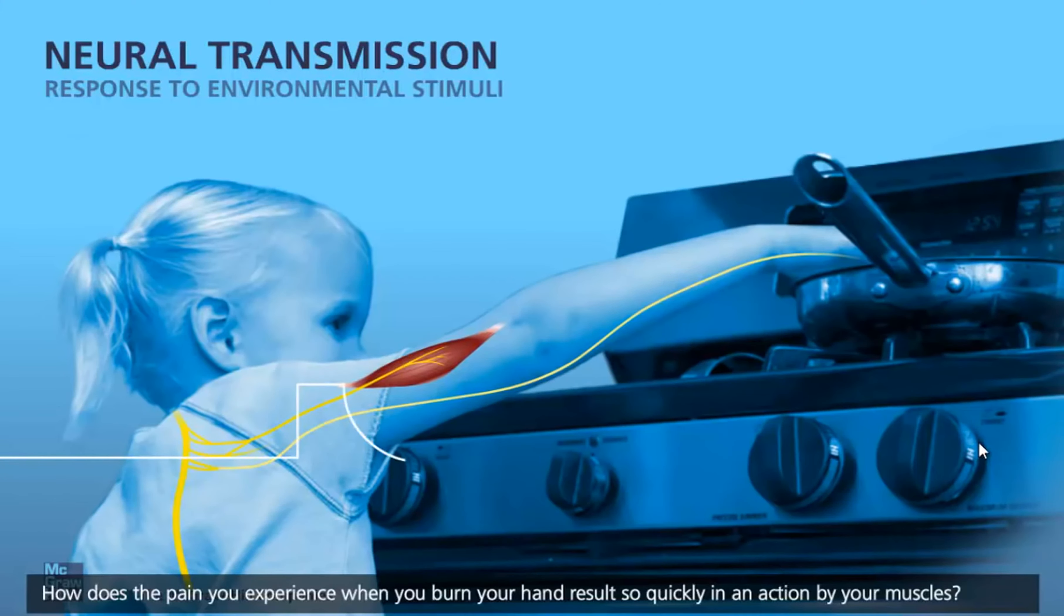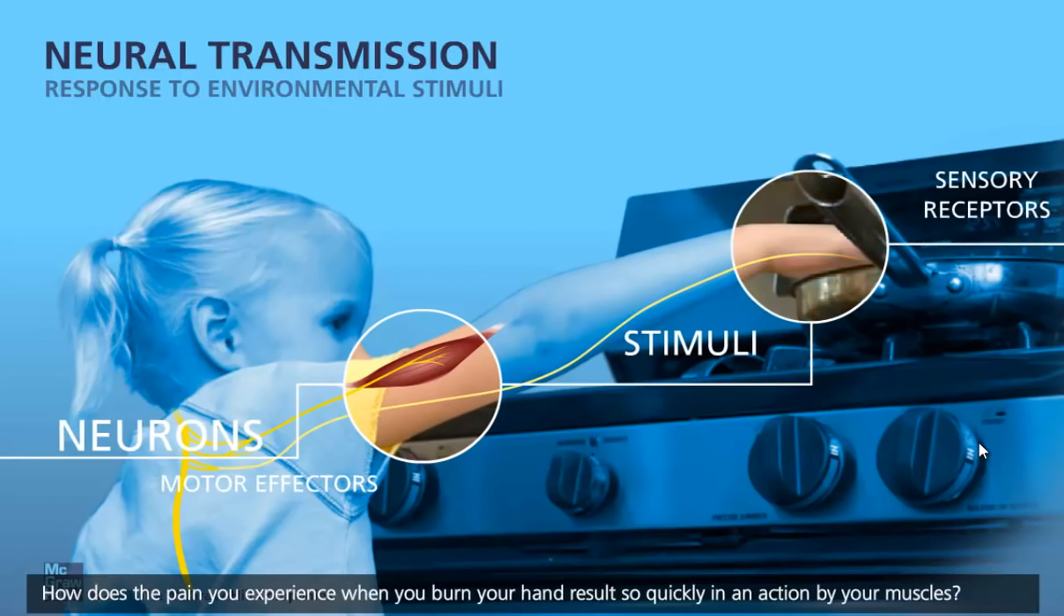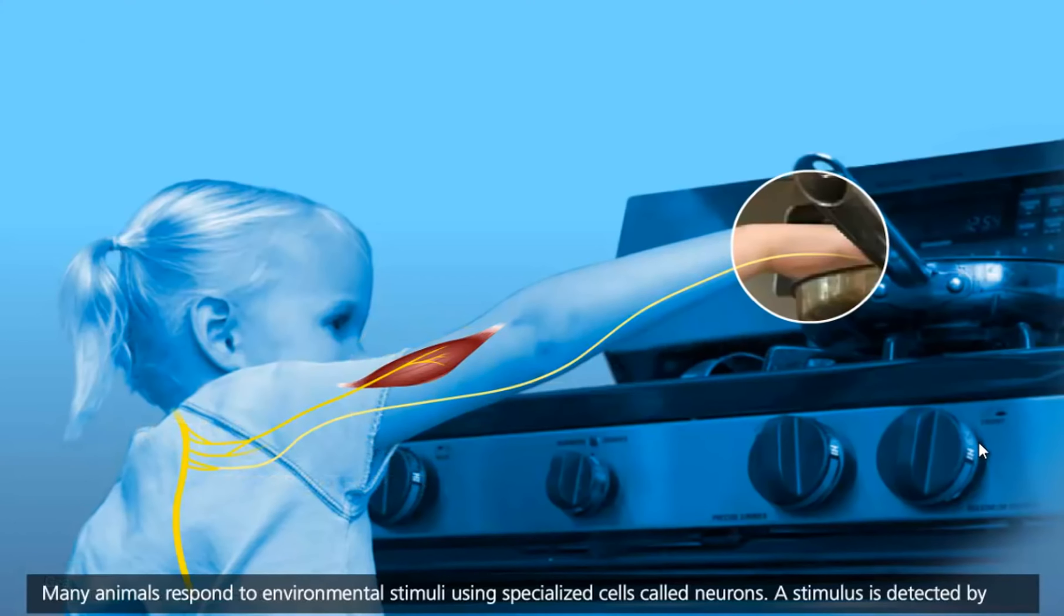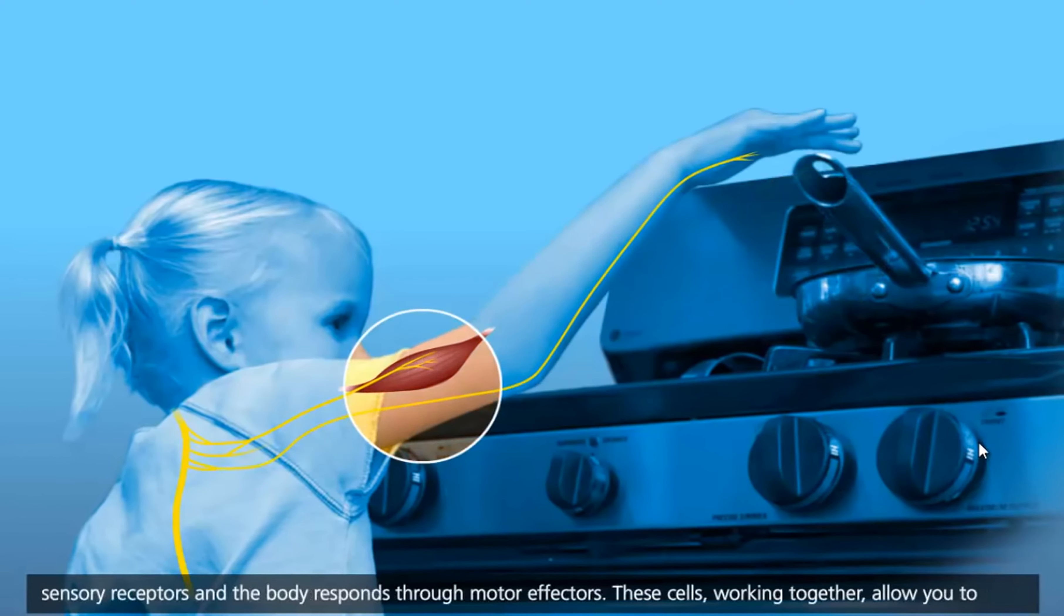How does the pain you experience when you burn your hand result so quickly in an action by your muscles? Many animals respond to environmental stimuli using specialized cells called neurons. A stimulus is detected by sensory receptors and the body responds through motor effectors.